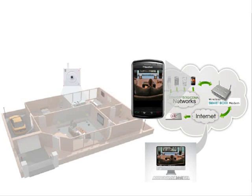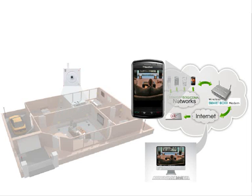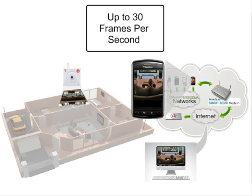The SmartEye uses MPEG-4 and MJPEG compression formats to provide smooth video and audio streaming for DSL, CATV, and other broadband network environments. Thanks to a high compression ratio, the MPEG-4 format allows the SmartEye camera to achieve a high frame rate of up to 30 frames per second, even under limited bandwidth over the internet.